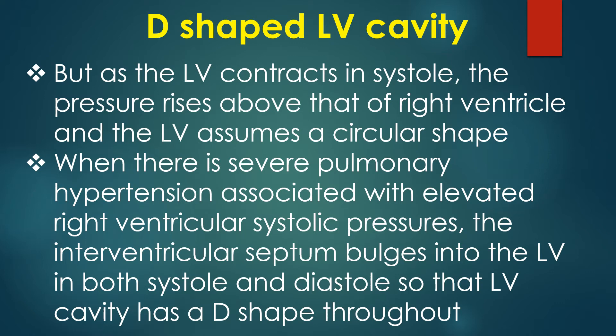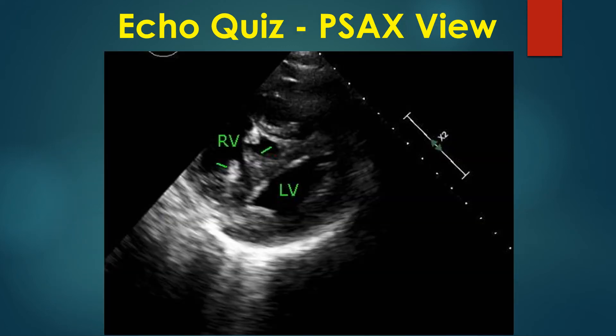When there is severe pulmonary hypertension associated with elevated right ventricular systolic pressures, the interventricular septum bulges into the LV both in systole, so that the LV cavity has a D shape throughout.